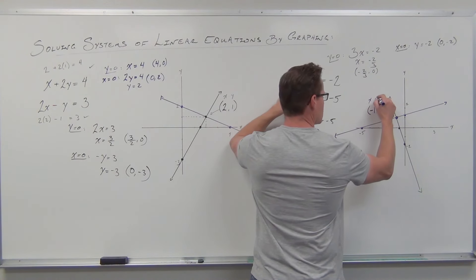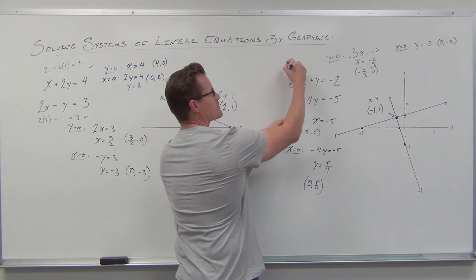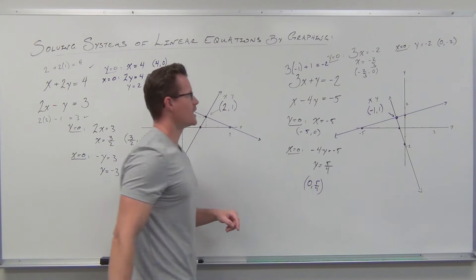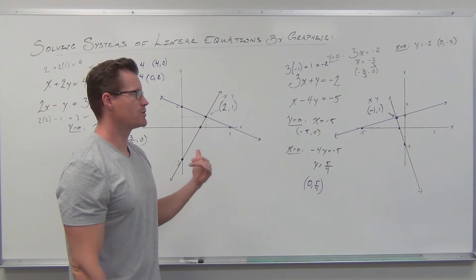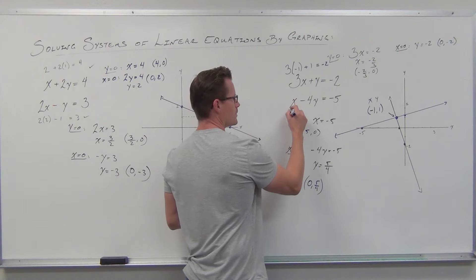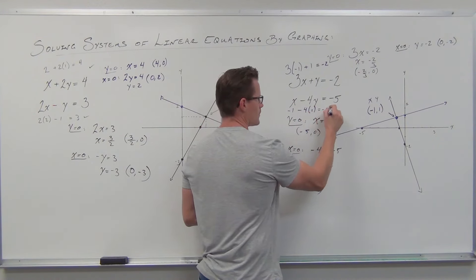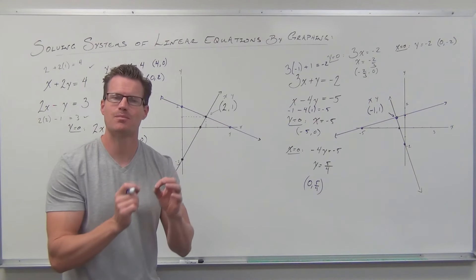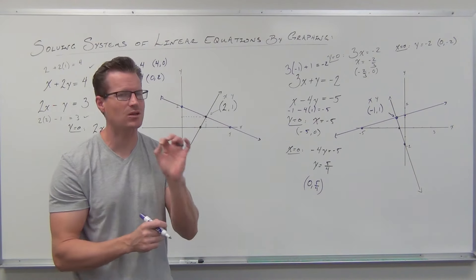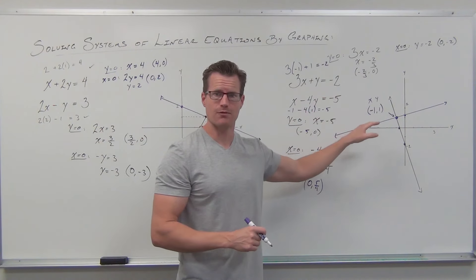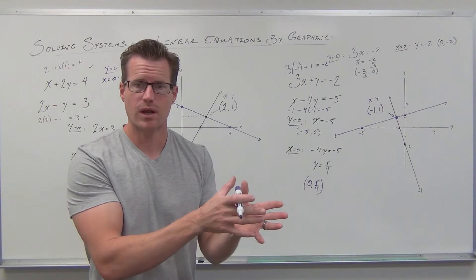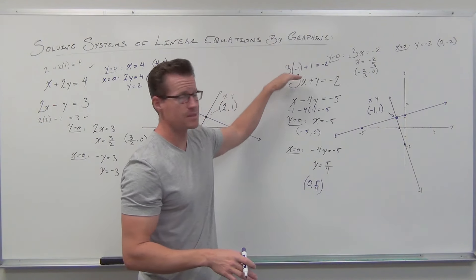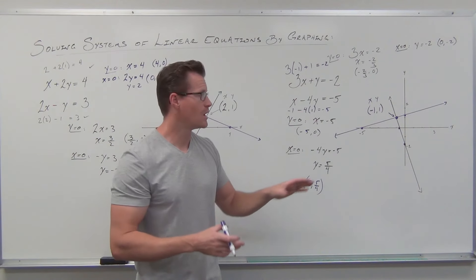I'm walking you through this because I want you to understand what's going to happen on your graphs. My intersection point doesn't clearly land on a grid mark, but it's closest to (-1, 1). Checking: 3 times negative 1 is negative 3, plus 1 is negative 2 — fantastic. It also has to work in the second equation: negative 1 minus 4 is negative 5 — that works. That point creates a true math statement in both equations, so it satisfies both. That is the solution to that system of linear equations.